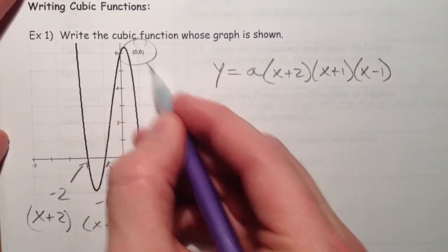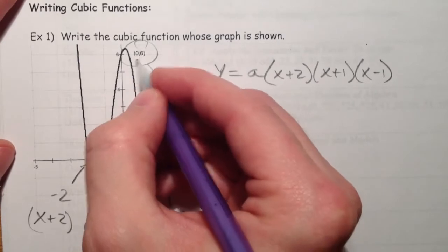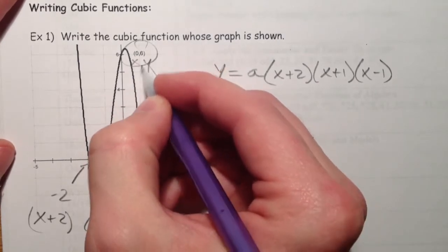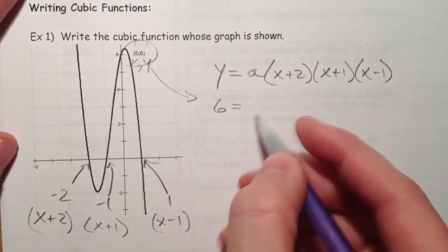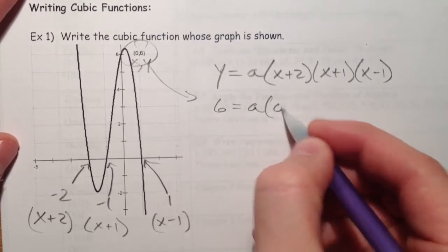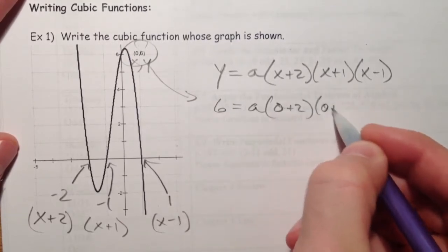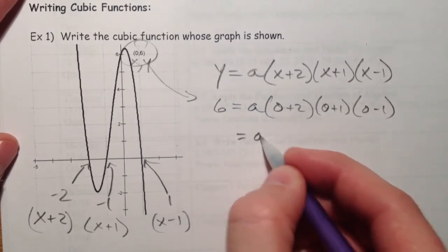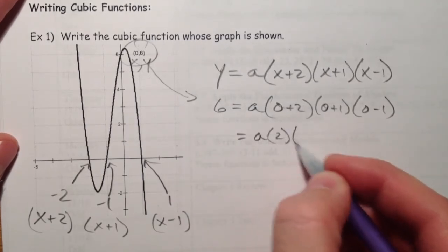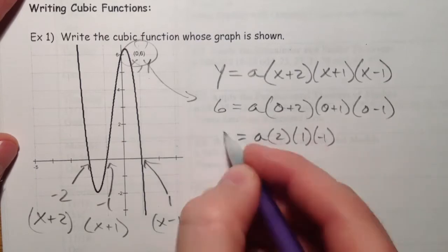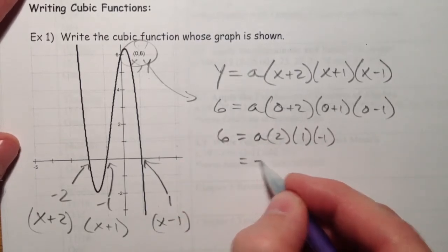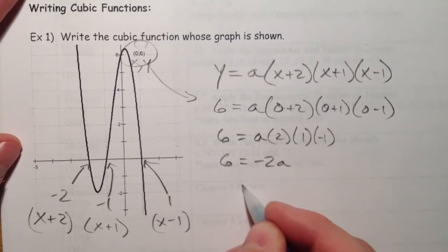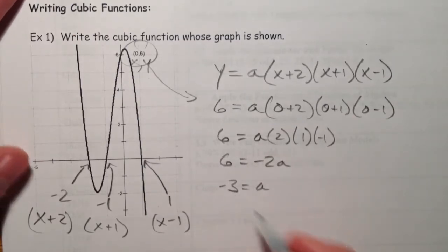But because I want it to go through (0, 6), that's what I'm going to do next. That's my x, y point. So y is 6, x is 0. So I get a times 2 times 1 times negative 1. So that's essentially negative 2a. And so a is negative 3.